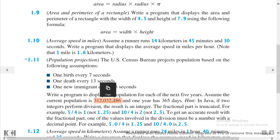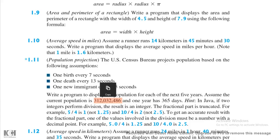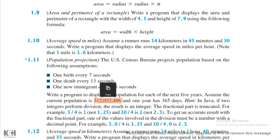The hint: in Java, if two integers perform division, the result is an integer — the fractional part is truncated. For example, 5 divided by 4 is 1, not 1.25, and 10 divided by 4 is 2, not 2.5. To get an accurate result with the fractional part, one of the values involved in the division must be a number with a decimal point — for example, 5.0 over 4 is 1.25, and 10 over 4.0 is 2.5.